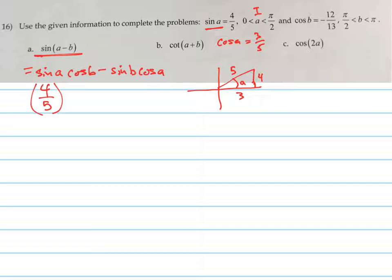And it tells you that the cosine is in the second quadrant. So B is in the second quadrant. And the cosine is negative 12. So adjacent is negative 12 and the hypotenuse is 13.